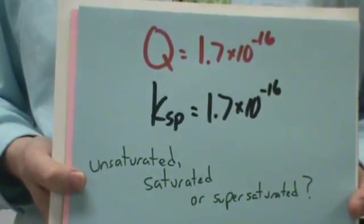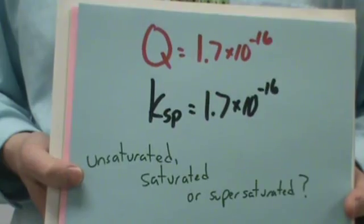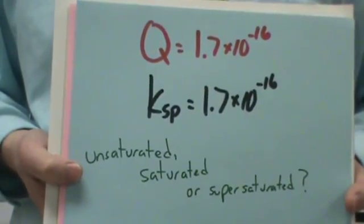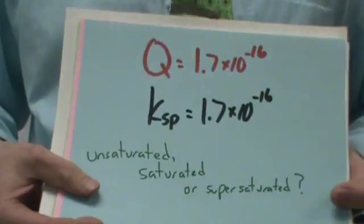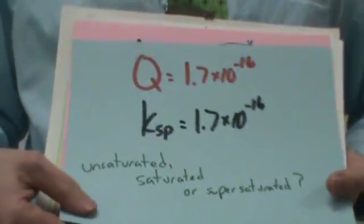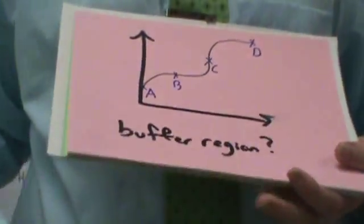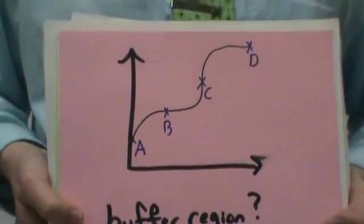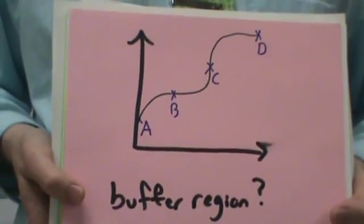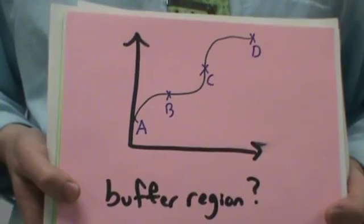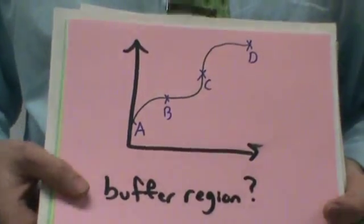Unsaturated, saturated, or supersaturated? Since they're equal, you would be saturated. You might not have precipitate, but you could. So B would be the best choice here.